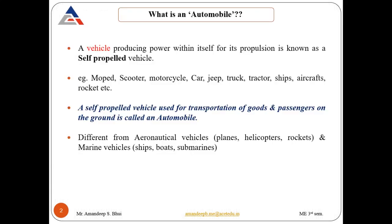The first question is: what is an automobile? A vehicle that produces power within itself for its propulsion is known as a self-propelled vehicle. All automobiles are self-propelled vehicles — they have an engine inside them which produces power, and that power is used to make the vehicle move in the forward direction.